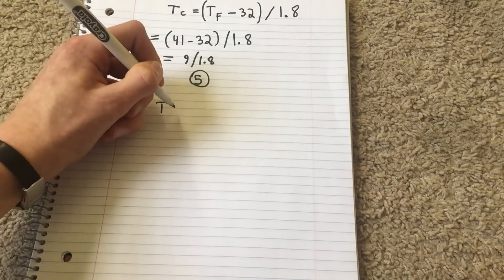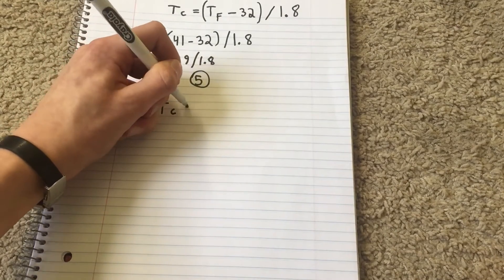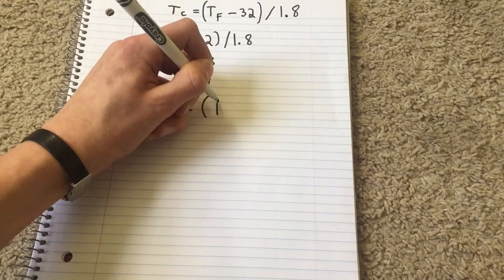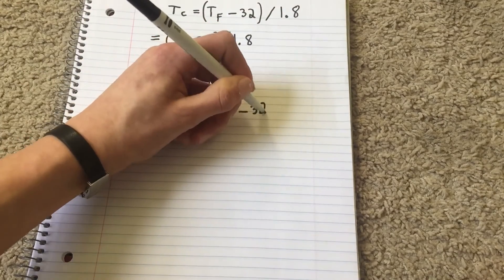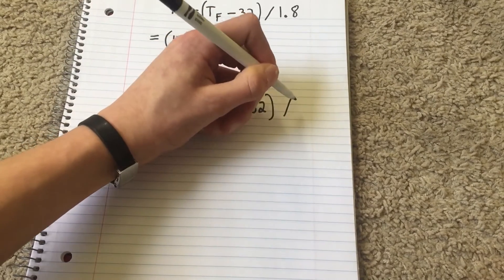I'll just rewrite this again for you. Temperature in Celsius is equivalent to T_F minus 32, and then all of that divided by 1.8.